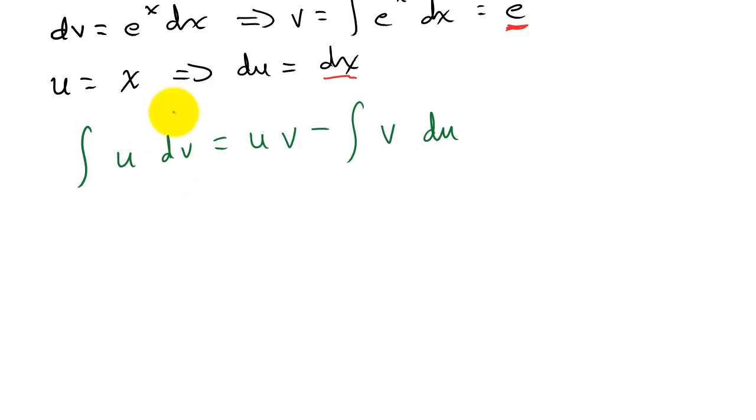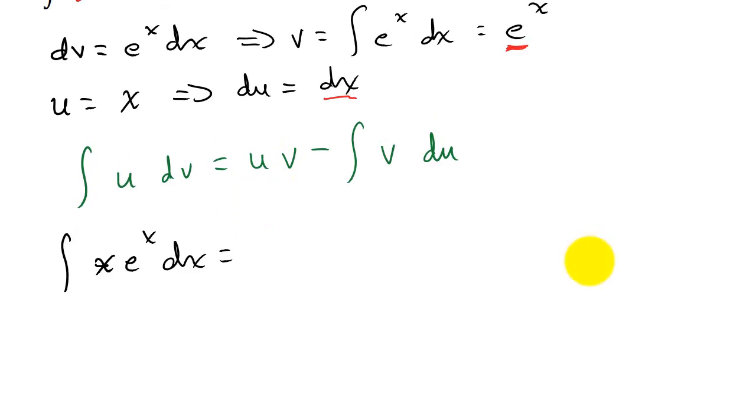All right, so now all we have to do is just plug everything in. So we get x e to the x dx is equal to u, which in this case is x, times v, which in this case is e to the x, minus the integral of v, and in this case v is e to the x, times du, and du is dx.